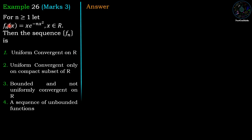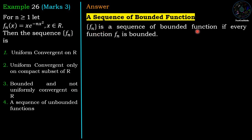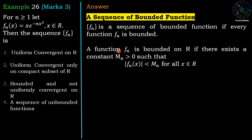First we recall boundedness. A sequence of bounded functions f_n is a sequence of bounded functions if every function f_n is bounded. Any function f_n is bounded on ℝ if there exists a constant M_n greater than 0 such that |f_n(x)| < M_n for all x belongs to ℝ. That means a sequence of functions is said to be bounded if all the functions are bounded.